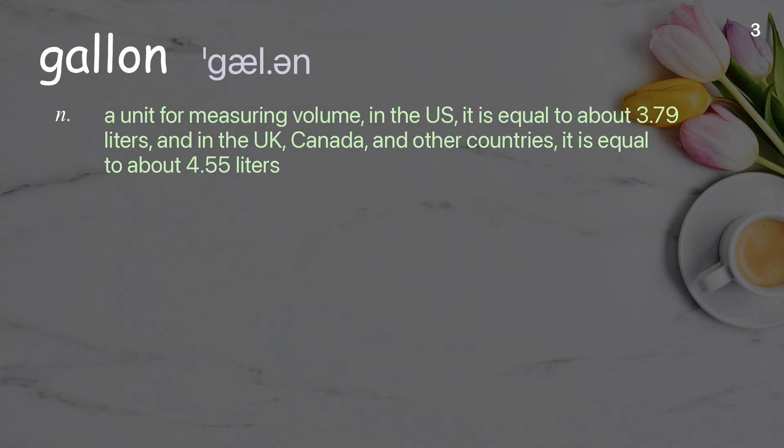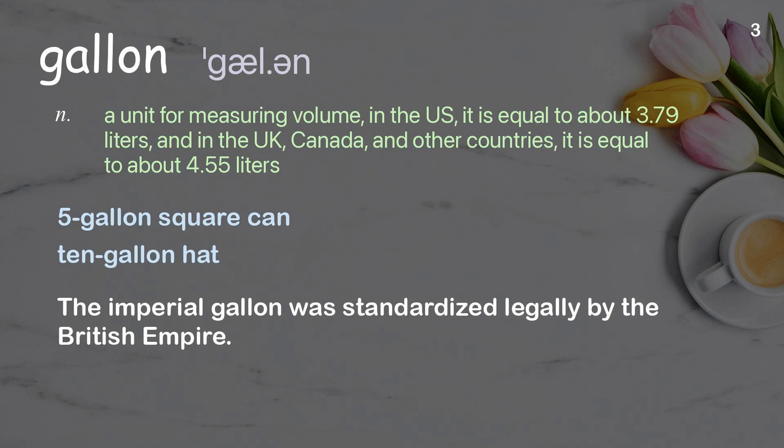Gallon: a unit for measuring volume. In the US it is equal to about 3.79 liters, and in the UK, Canada, and other countries it is equal to about 4.55 liters. Examples: five-gallon square can, ten-gallon hat. The imperial gallon was standardized legally by the British Empire.